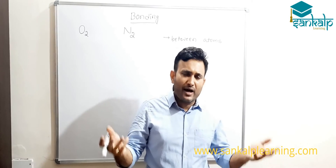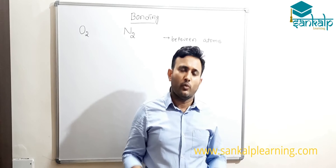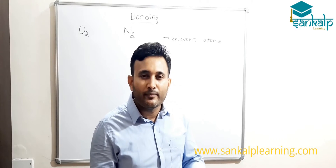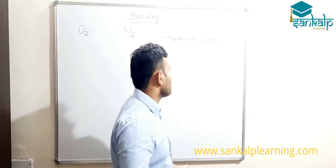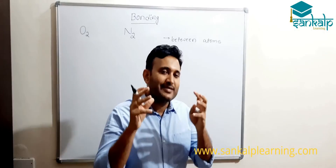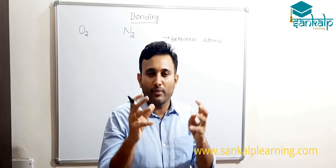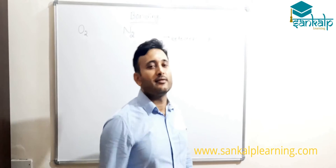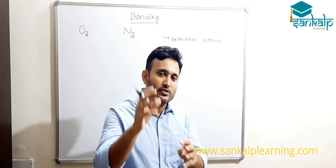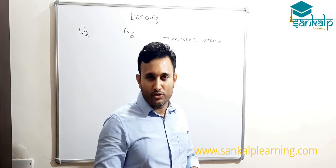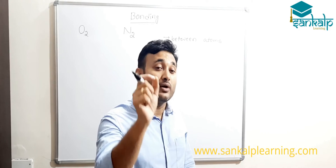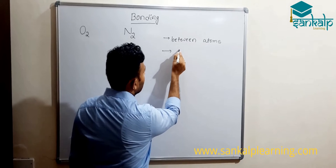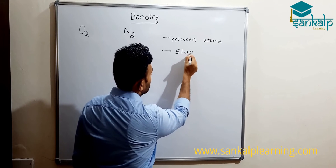Atoms would have existed as atoms themselves. Why should bond formation take place between atoms to form a molecule? When atoms of the same or different elements combine together to form a molecule, they get stability. So atoms combine to form a molecule through bond formation in order to attain stability.